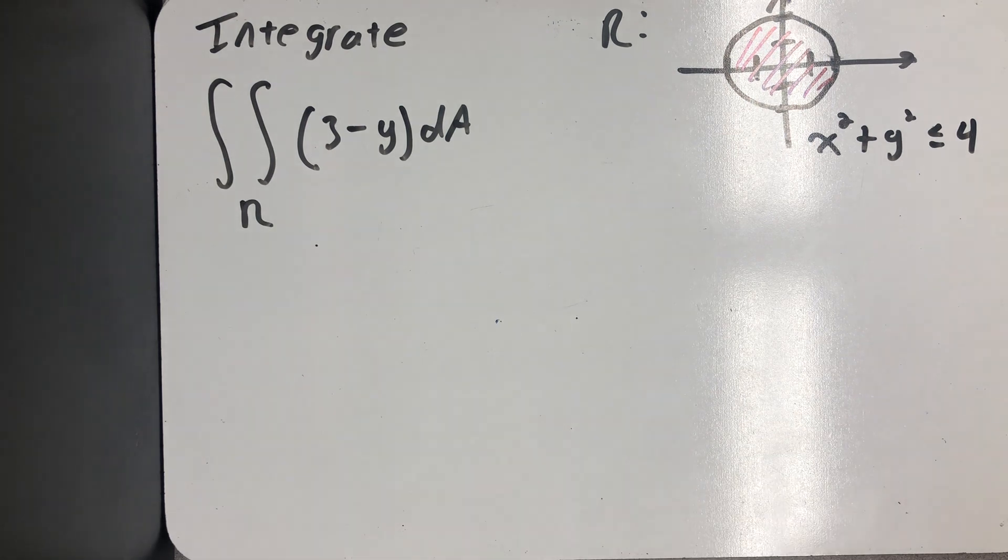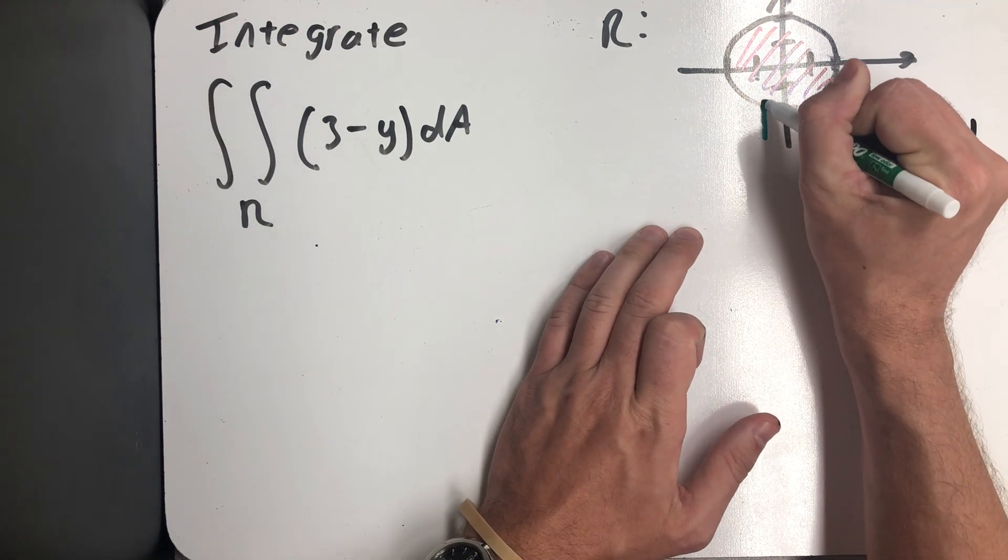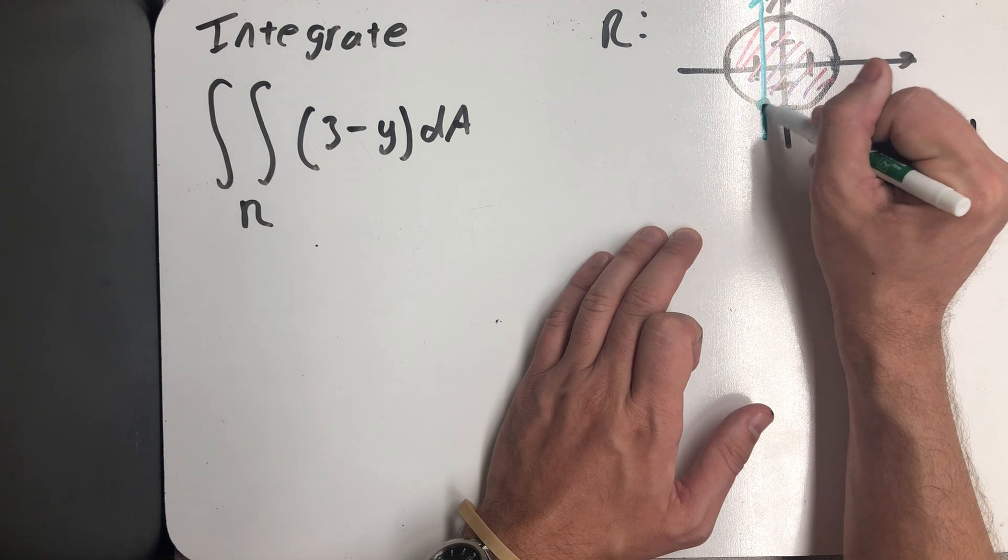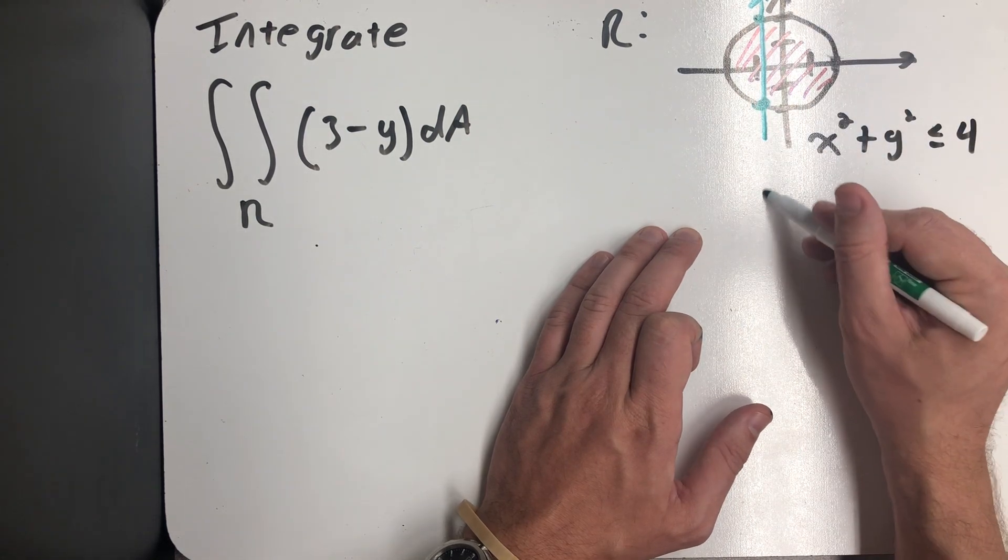Okay, so I am going to first integrate with respect to y and then x. So I draw a ray through the region in increasing order of y, and I need to think about a bottom function and a top function.